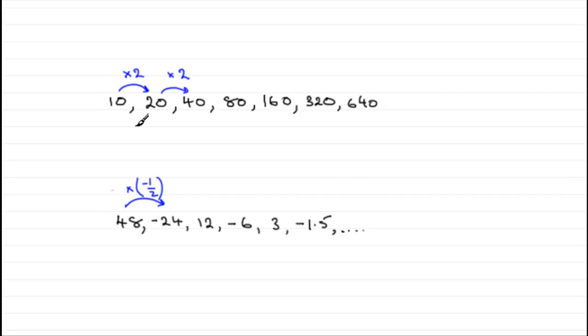Now when we get sequences like this where we multiply each term by a constant value they are called geometric progressions or geometric sequences.